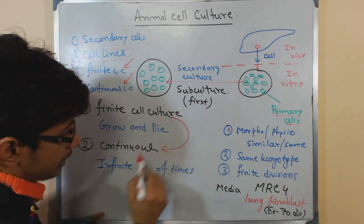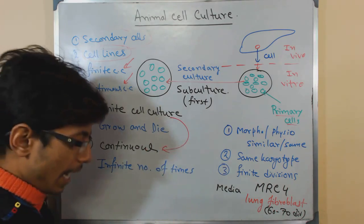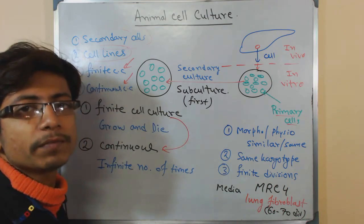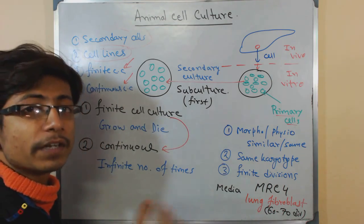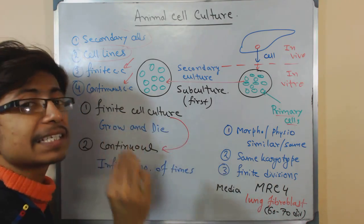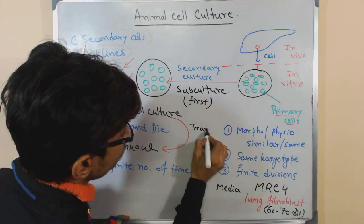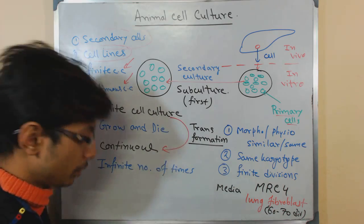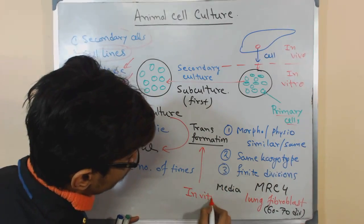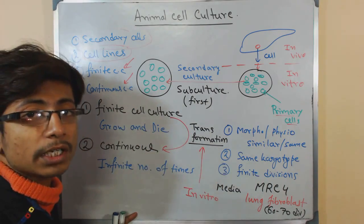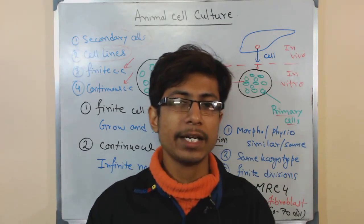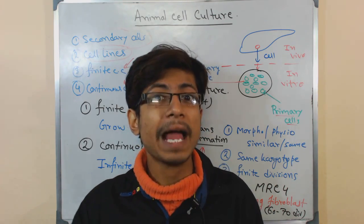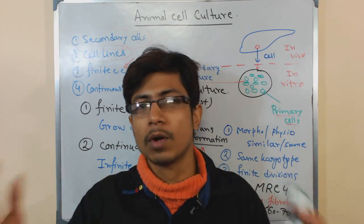Continuous cultures are actually produced from finite cell lines, because finite cell lines have some type of chemical modifications inside. Any chemical or physical modifications of the cell will turn those finite cell lines into infinite ones. This is called transformation — in vitro transformation of those finite cells into continuous or immortal cell types. Just as in the body, carcinogenic agents can cause mutations inside the cell and ultimately turn the cell into tumorous or malignant cells that will grow and divide continuously, creating a huge mass of cells.